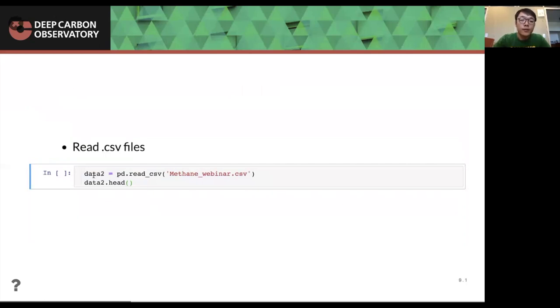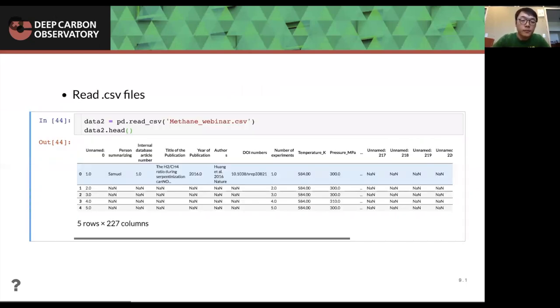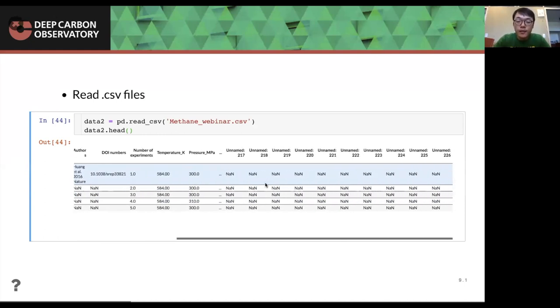And here is, we'll show you how to read a CSV file. So again, we use PD.read_csv and read the CSV file called the methane webinar. This is exactly the same file. I manually save the Excel file, save as CSV format. They have the same contents. And after reading into data2 data file, and we can take a look at the top five rows. Again, it shows the top five rows, but it has 227 columns, which you can see at the end, there are like a bunch of empty columns.